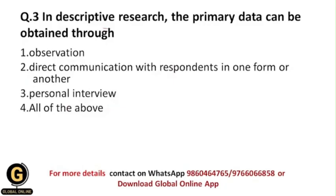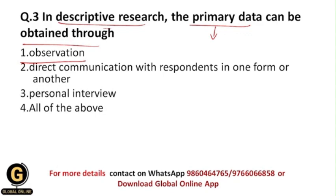Next question: in descriptive research, primary data can be obtained through which methods? Primary data is data collected by the first user — it is the data collected for the first time. The options are: observation, direct communication with respondents, personal interview, or all of the above. There are many data collection methods in descriptive research. The first is observation, used to obtain quantitative data.